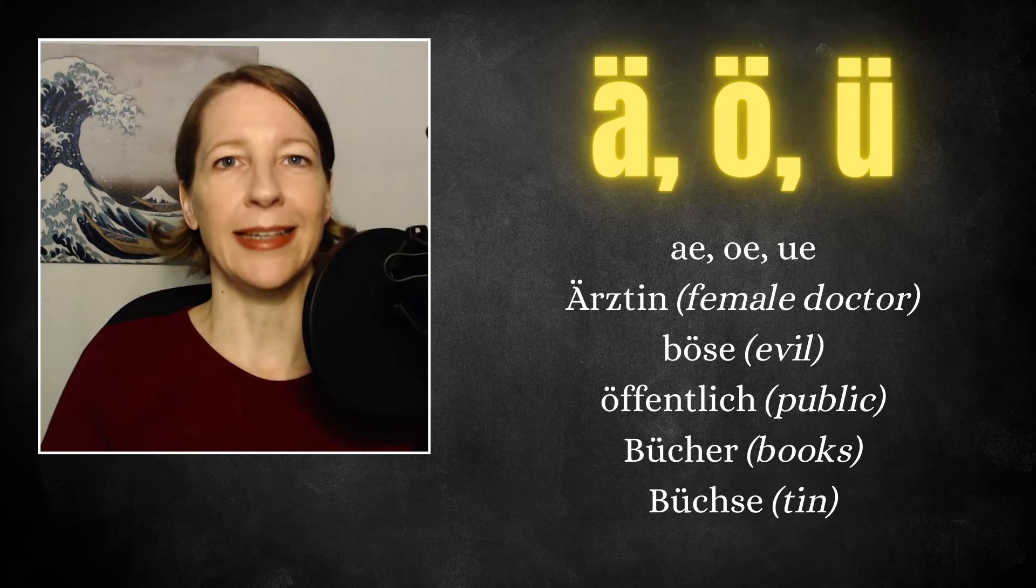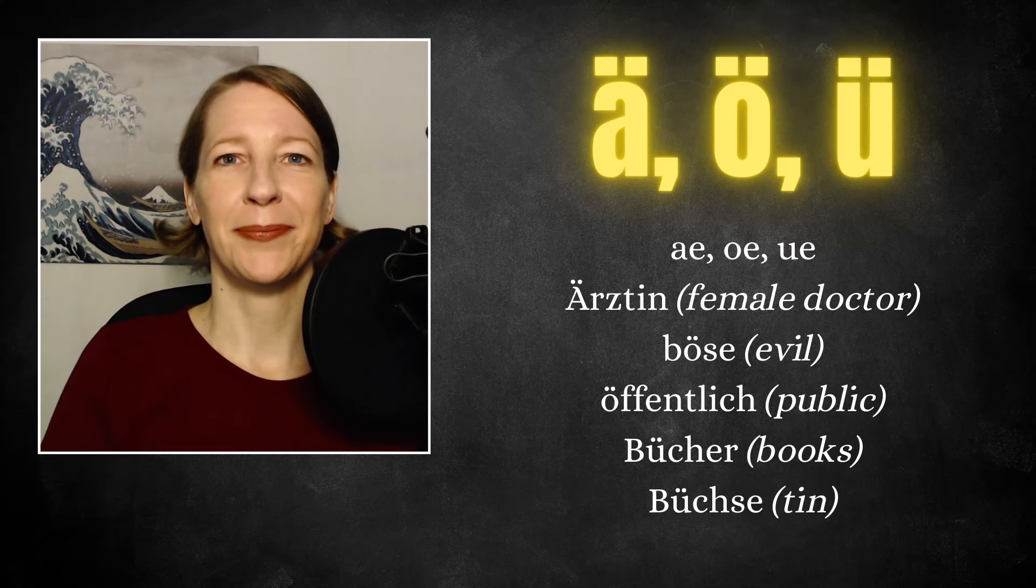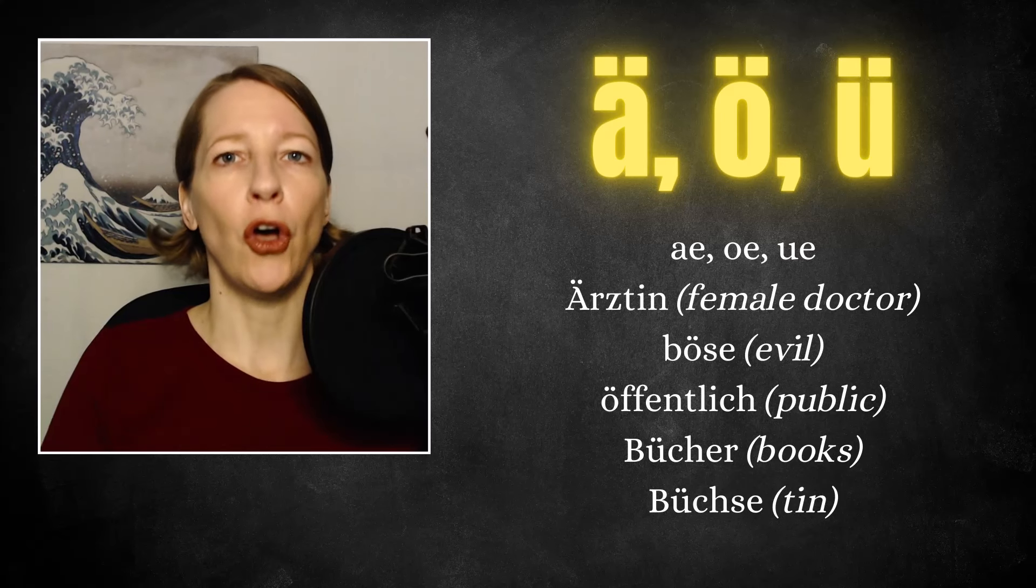Ä. As for example in Ärztin. Ö. As in Böse. Öffentlich. Here you can also see we have a long form and a short form. Böse. Öffentlich.